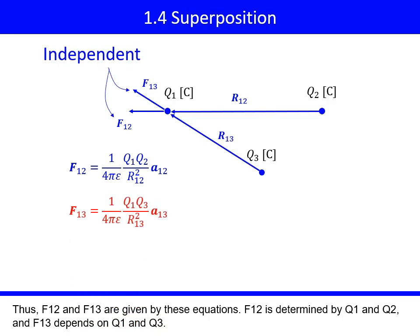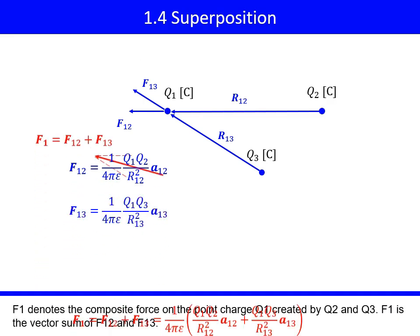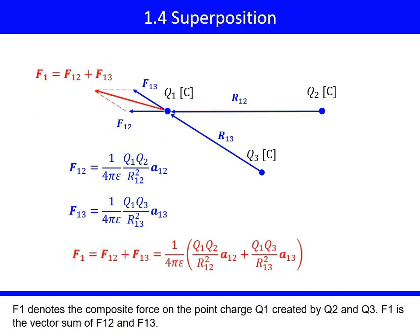Thus, F12 and F13 are given by these equations. F12 is determined by Q1 and Q2, and F13 depends on Q1 and Q3. F1 denotes the composite force on the point charge Q1 created by Q2 and Q3. F1 is the vector sum of F12 and F13.